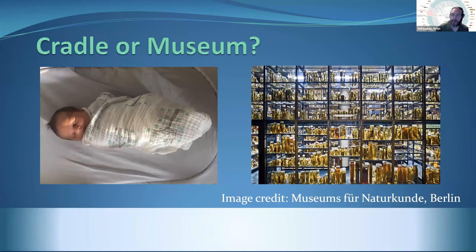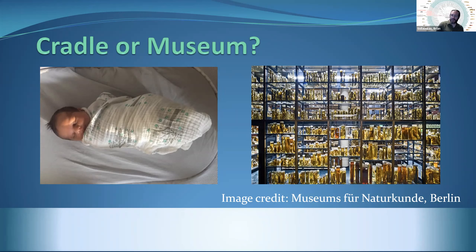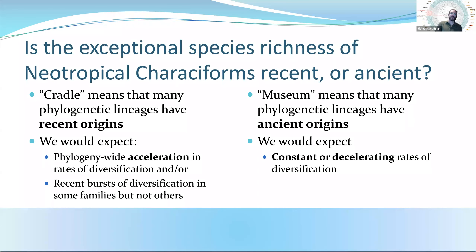This really comes down to classic questions about tropical diversity: are the tropics a cradle of diversity or a museum of diversity? I'm illustrating those two concepts with two images — one is a picture of my daughter Fiona when she was an infant in her cradle, and on the right a wonderful image of the collections at the Museum für Naturkunde in Berlin. What do I mean by these metaphors? Essentially: is the exceptional species richness of neotropical Characiformes recent or is it ancient?